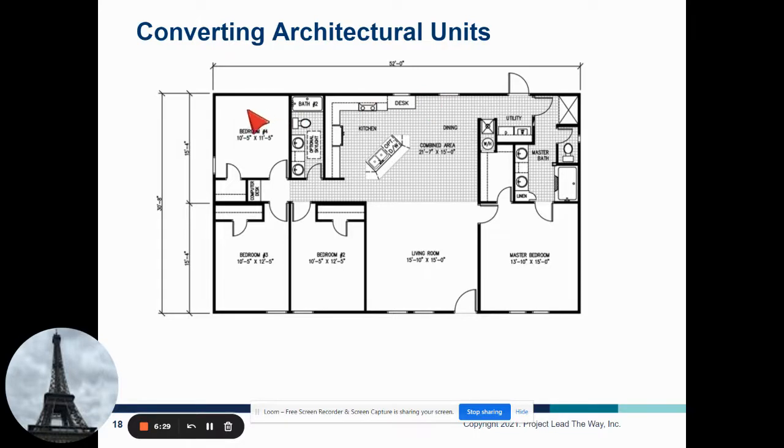Yeah, so these are called blueprints and this is a layout of a home. Bedroom, bedroom, bedroom, living room, master bedroom with the restroom attached. Usually, ladies, the master bedroom is connected to the restroom. That's what makes it. It's actually now called primary bedroom. Then you have your kitchen and then over here you have your bathroom that all the kids will share.